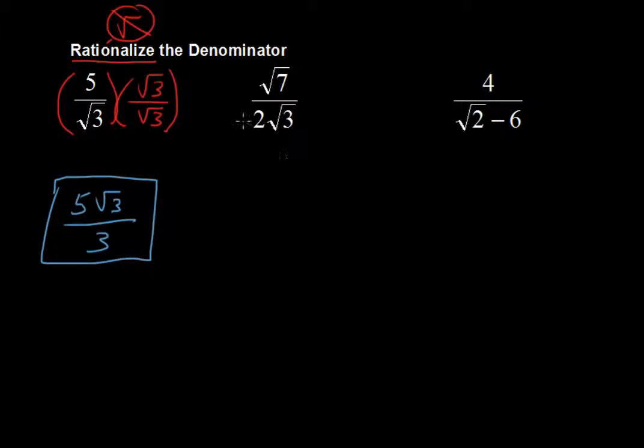So next one, we don't have to multiply by the 2, because only the square root of 3 is in the radical there. So again, I am going to multiply both the top and the bottom by the square root of 3, because that is the radical here.